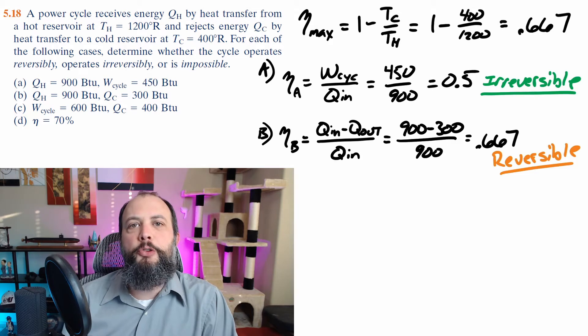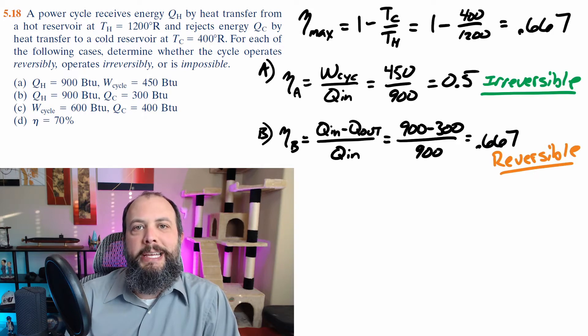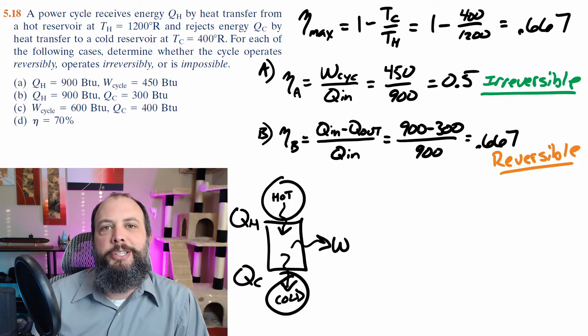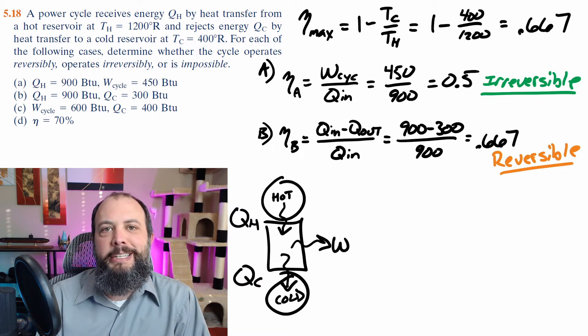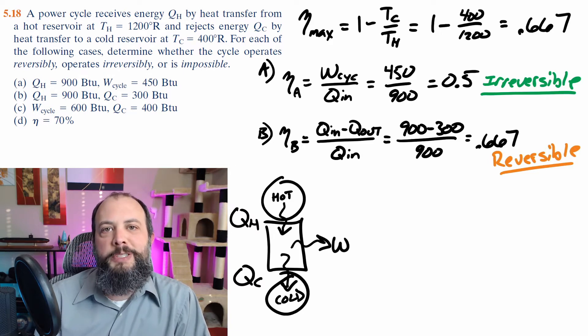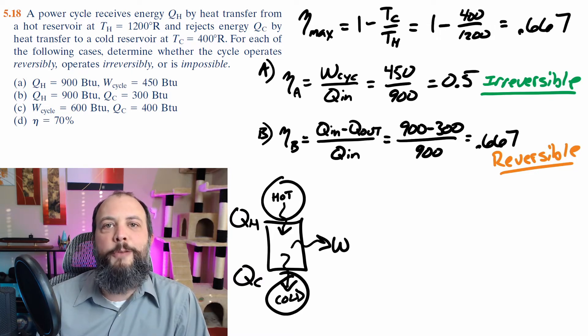For part B, we're given Q_cold instead of work. So in this case, I've changed the numerator and replaced work of the cycle as Q_in minus Q_out. So if I draw a picture here of a system operating between a hot and a cold source, you can see just based on a conservation of energy, that the heat in splits up into work and heat out. So therefore work must be heat in minus heat out. So plugging that into the efficiency equation, we get 66.7%, which shows that this is reversible.